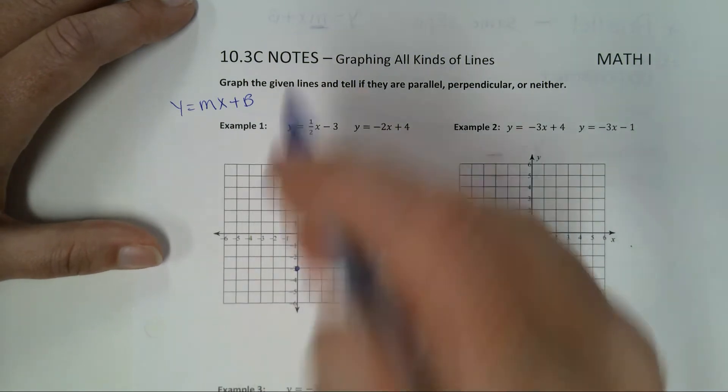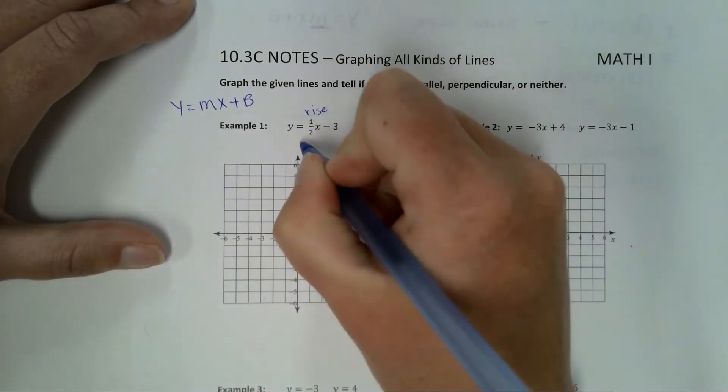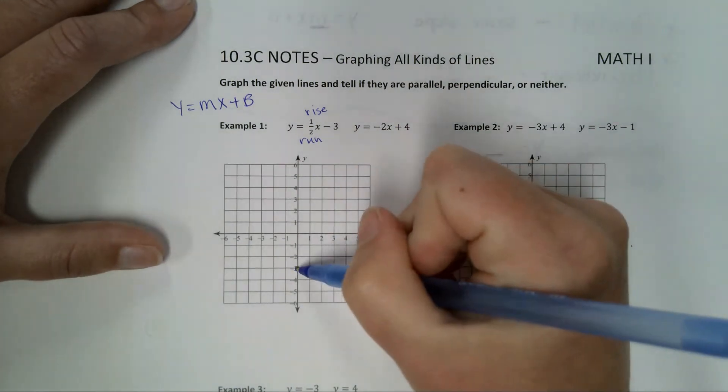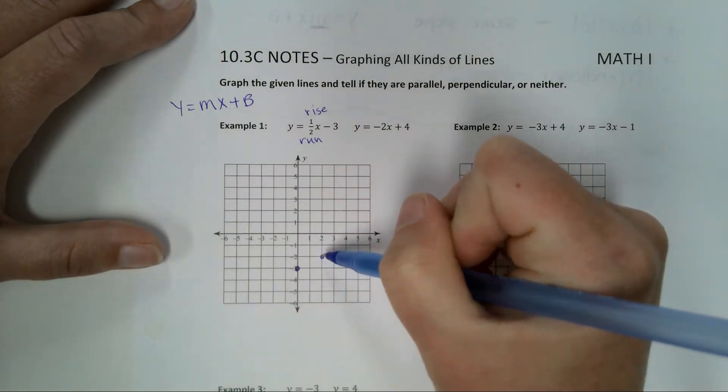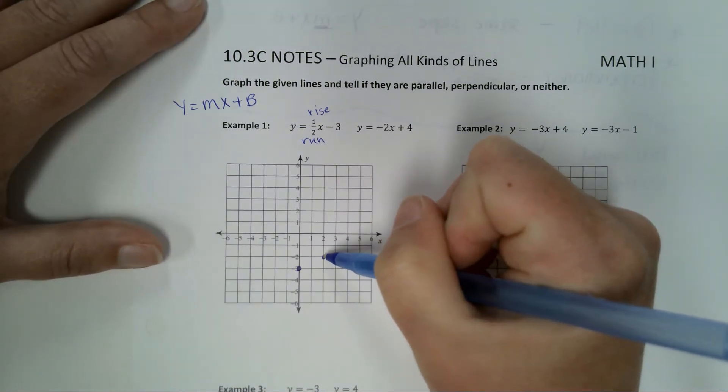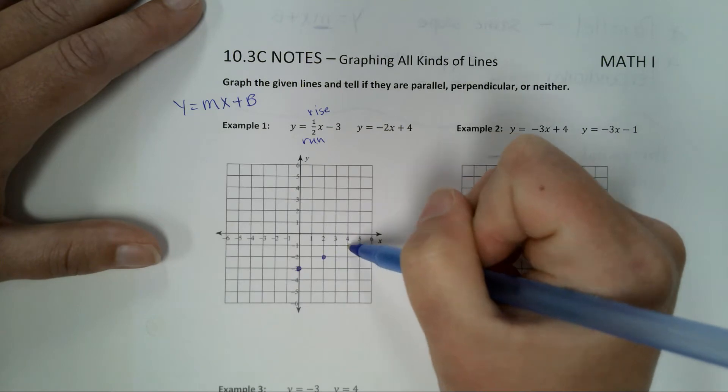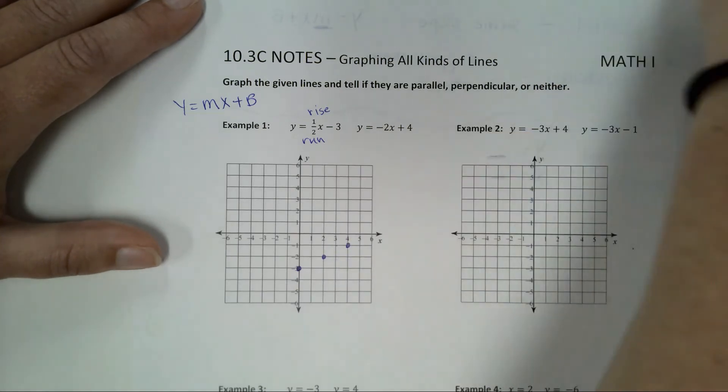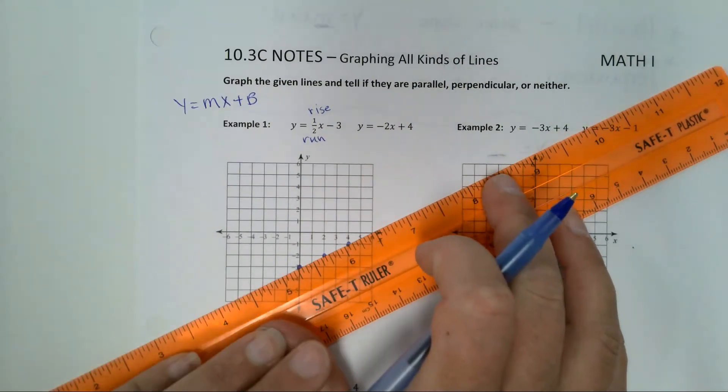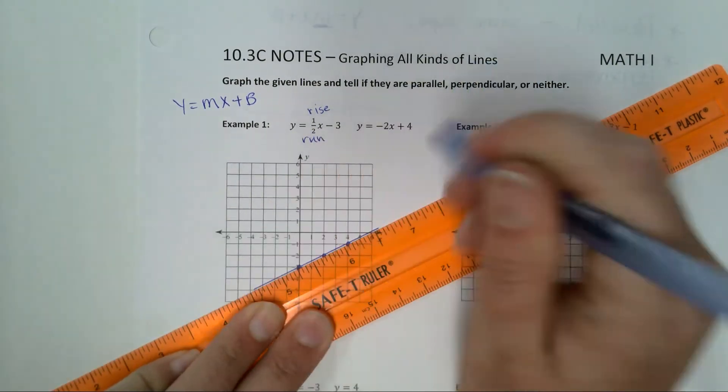It tells us to rise 1 and to run 2, because remember it's rise over run. So from here, I'm going to rise 1 and run 2. And you can do it again if that makes it look better, if that makes it easier for you. Rise 1, run 2. You don't have to. And then connect them. And there you have this beautiful line.